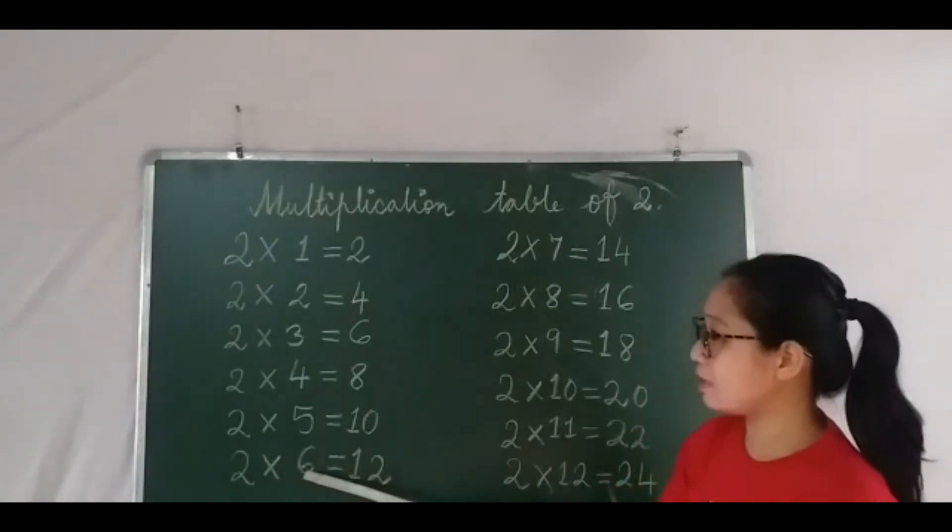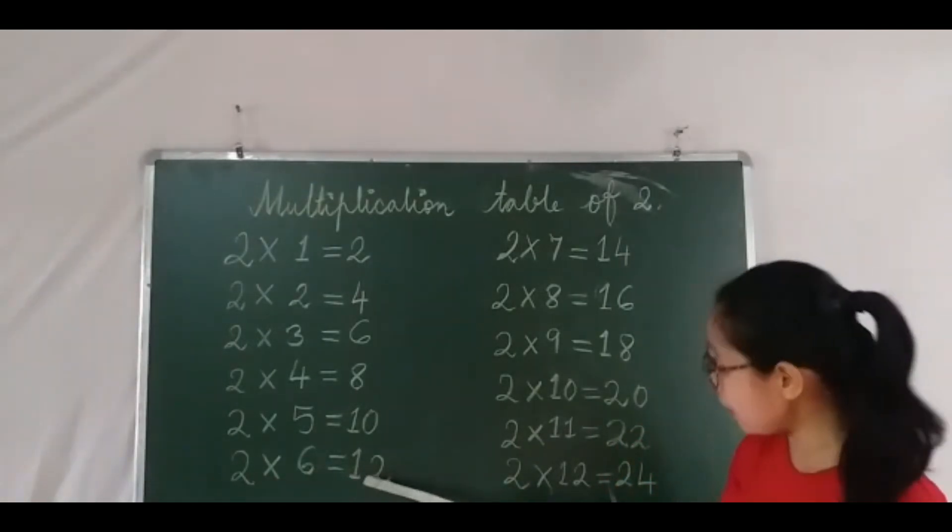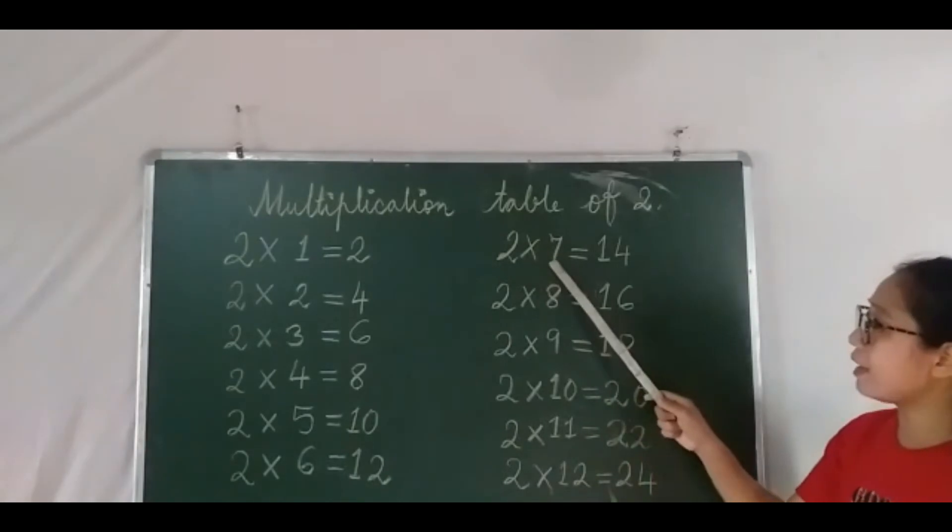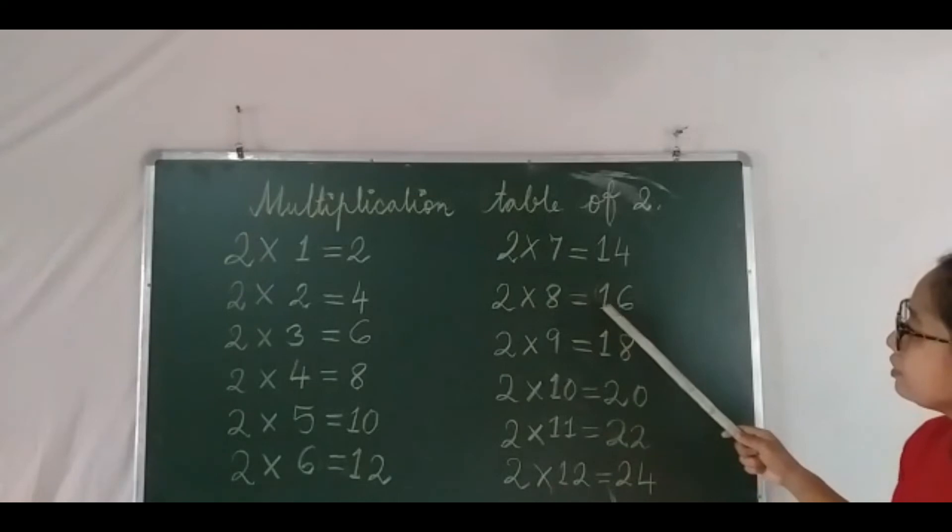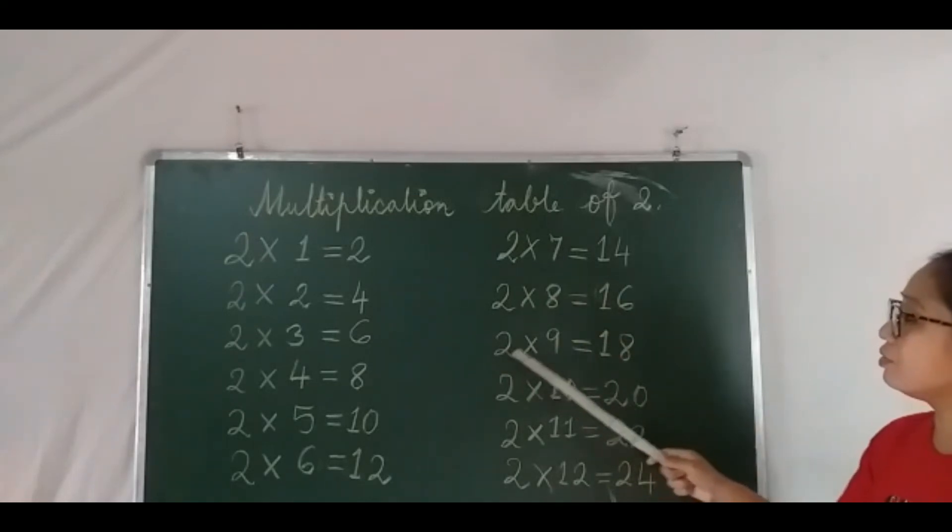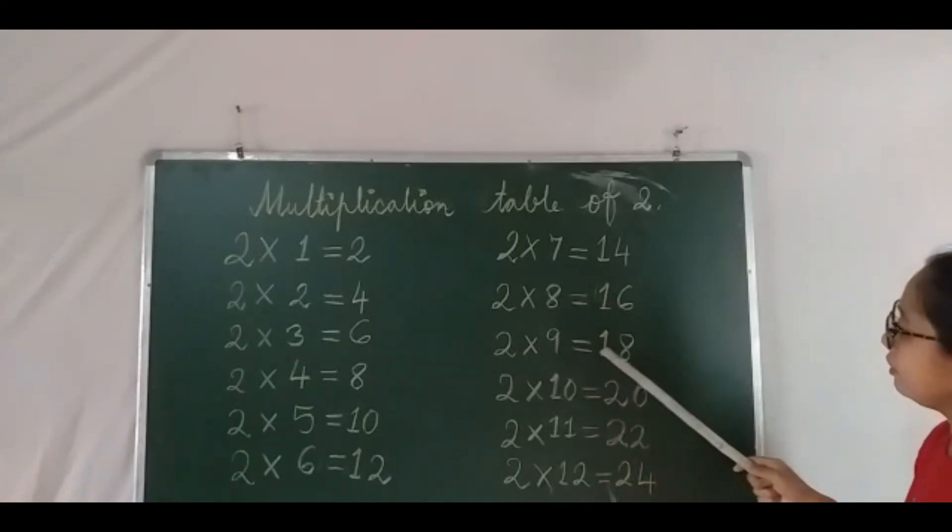Two sixes are twelve, two sevens are fourteen, two eights are sixteen, two nines are eighteen.